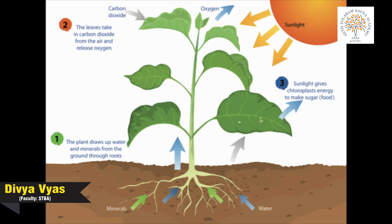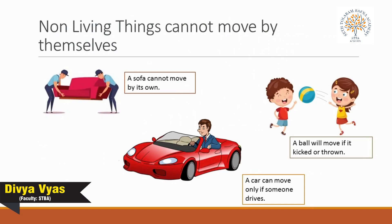For example, the roots go down into the soil in search of water. The stem moves upwards in search of sunlight and air. Non-living things cannot move from one place to another on their own.